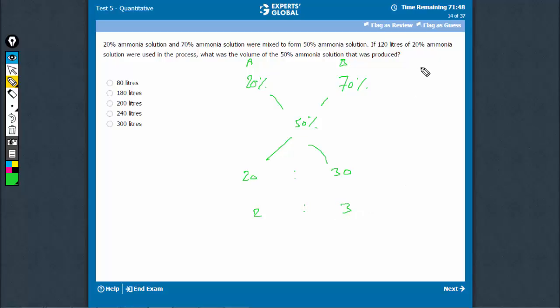Now, this says 120 liters of 20%. This refers to 20%. So if the ratio is 2 is to 3, this is 120. So this has to be 180.